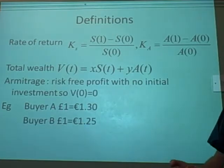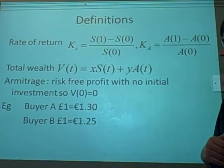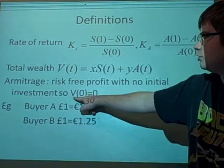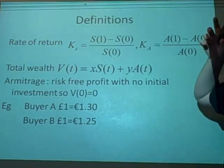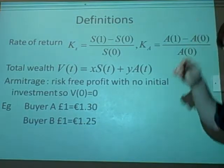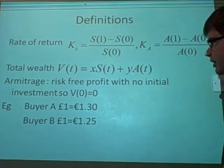Arbitrage—it's a risk-free profit with no investment. The initial total wealth is always 0 to start off with. I've got a little example here to hopefully explain how that can happen, how you can have nothing and still make money.